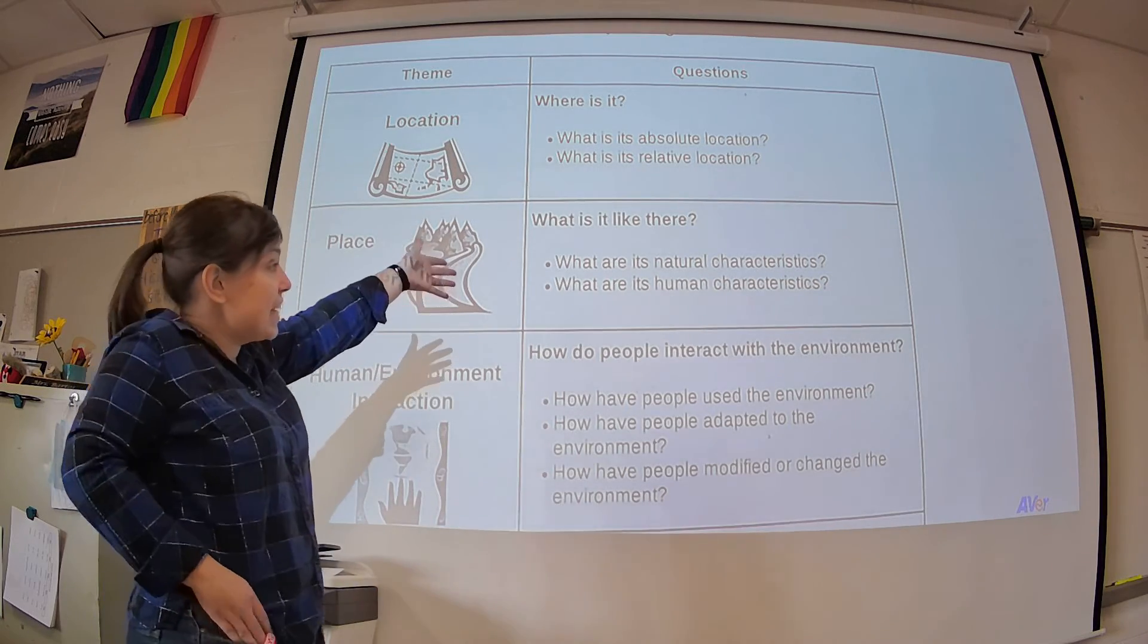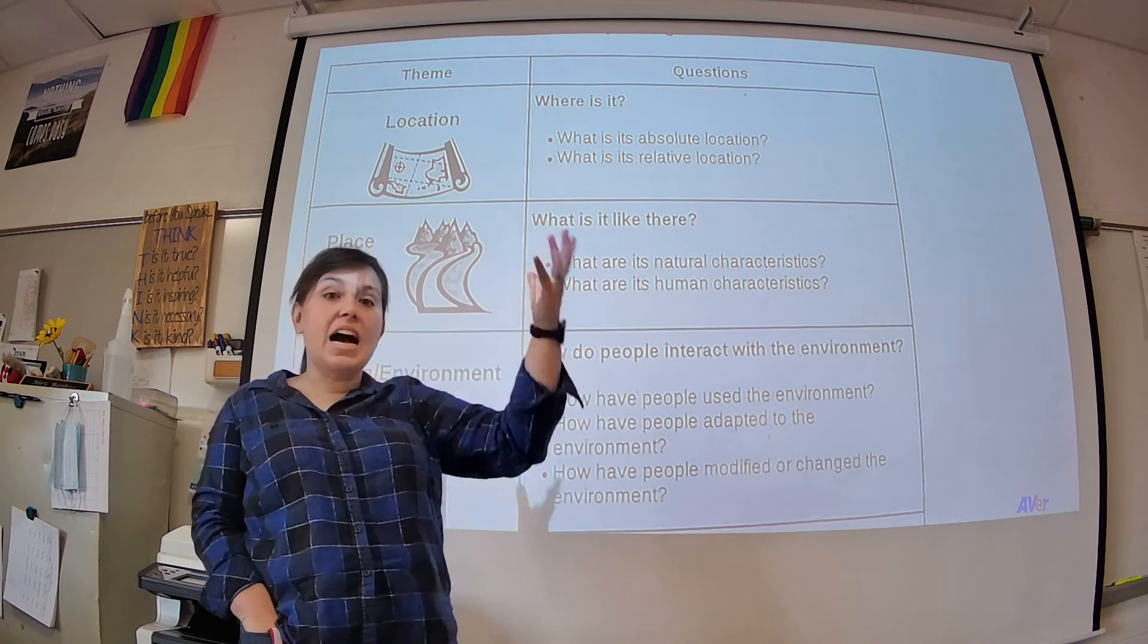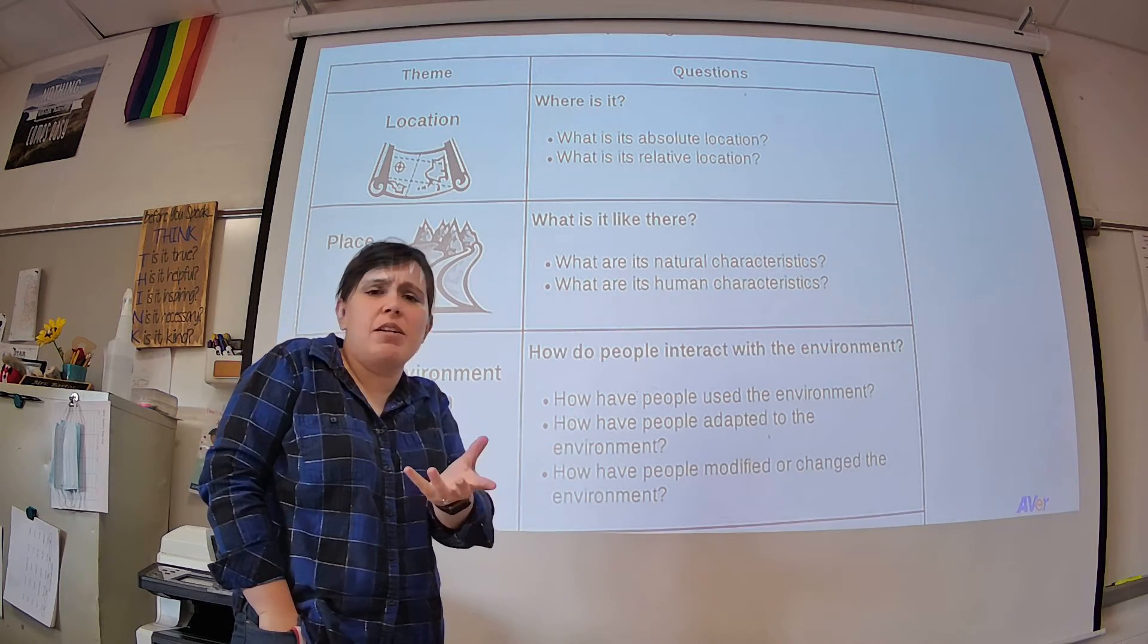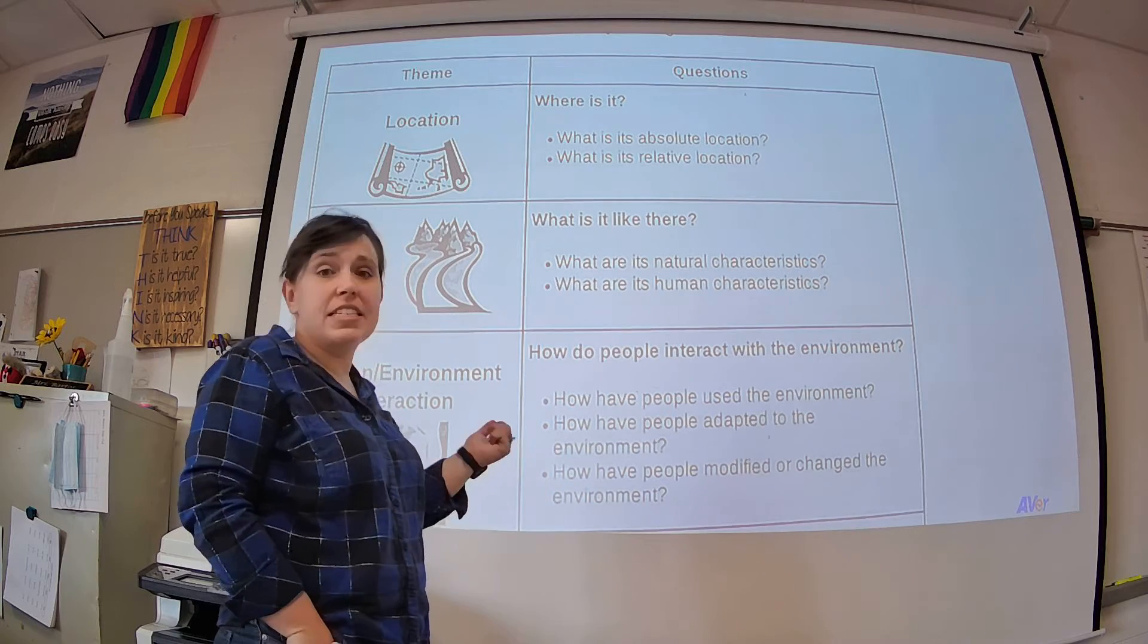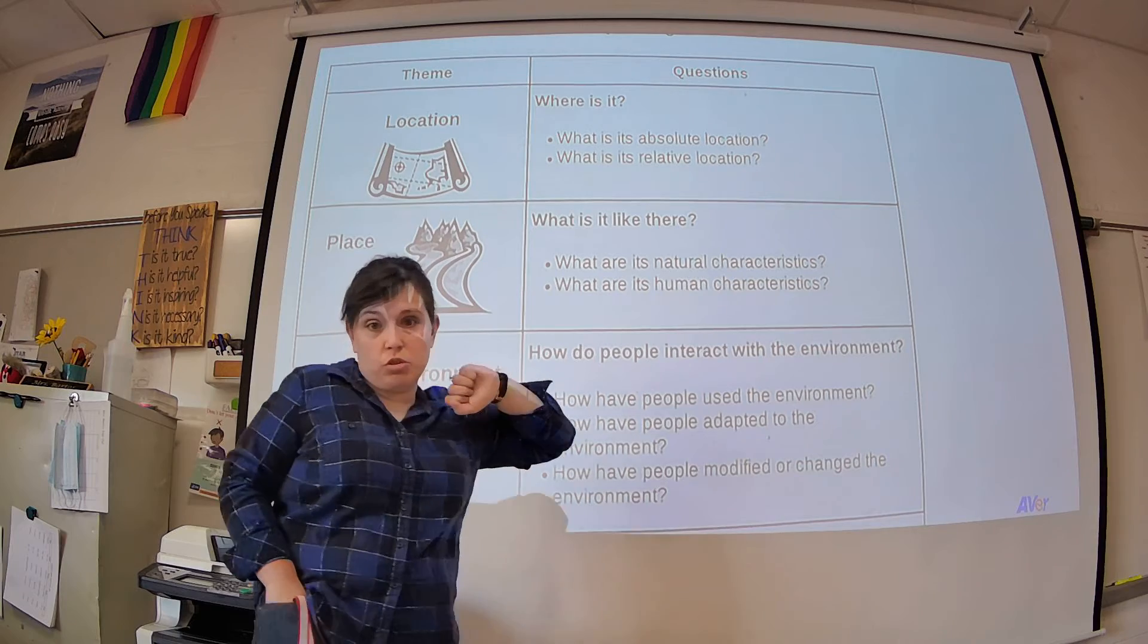Place: what is it like there? When we go there, is it hot? Is it cold? Are there a lot of animals? Are there hardly any? Does it get a lot of sun? Is there water around? That's what we're talking about for place, for description.